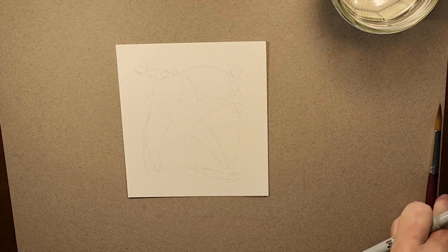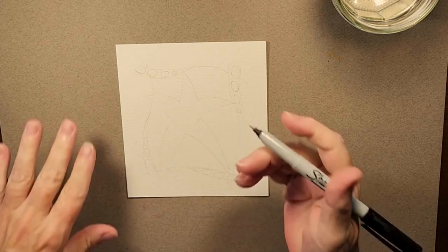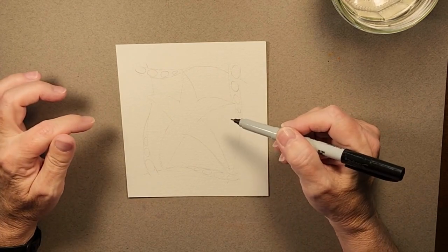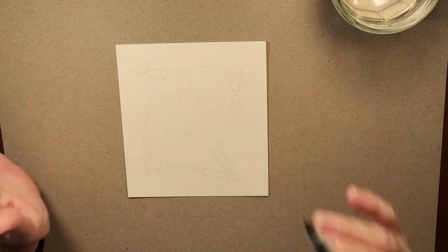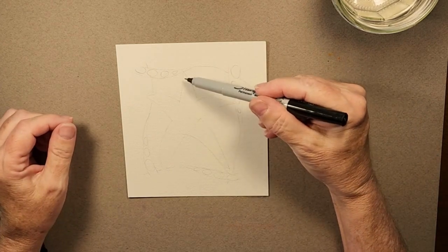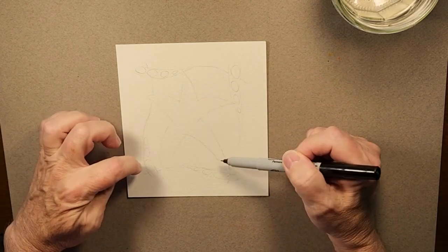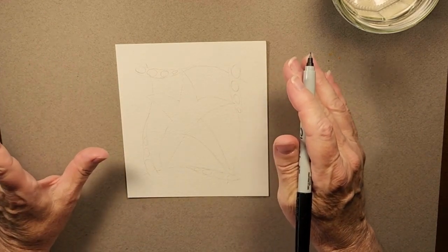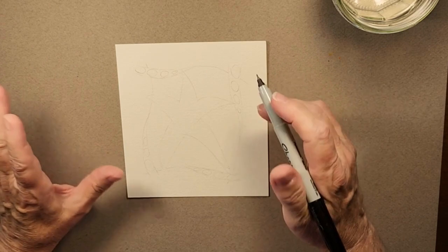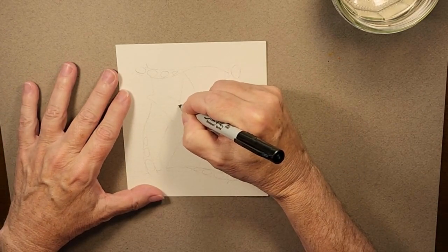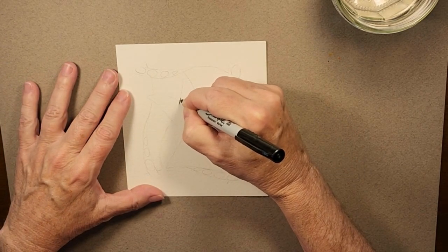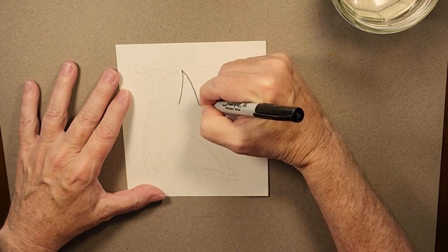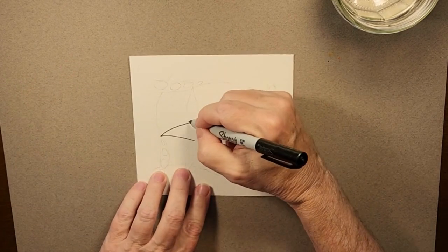So what I'm going to do is actually start with going over the lines and sketching this in. When you're drawing a starfish, it's a real basic thing to keep in mind that it's like a head, two arms and two legs. And so there's always five tentacles. I shouldn't say always, but on most starfish there's five tentacles.